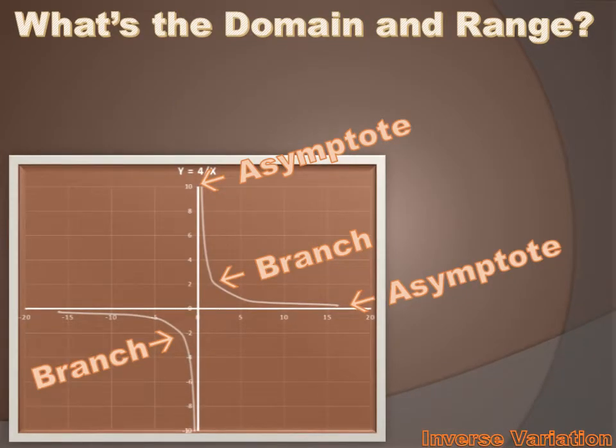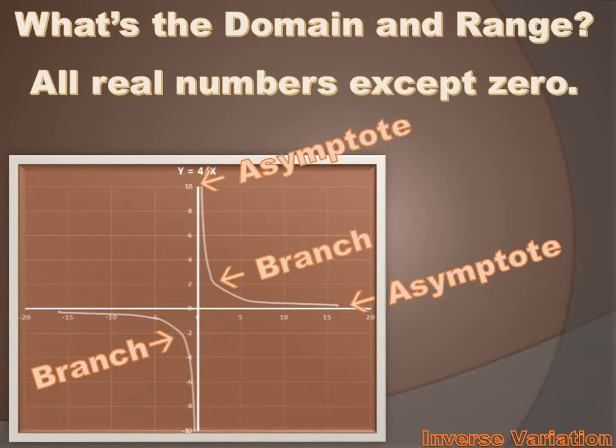Each branch of the hyperbola approaches both the x axis and the y axis. And it approaches it and gets closer and closer, but it never reaches there. The values never get to zero. We never get an x equals zero value. We never get a y equals zero value. So what's the domain and range? Well, it's all real numbers except for zero.